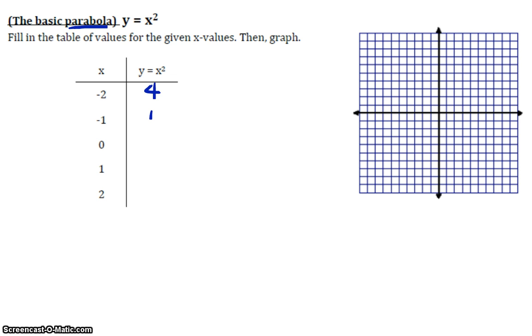We should have 4, negative 1 squared is 1, and negative 2 squared is negative 2 times negative 2, which is positive 4. 0 squared is 0, 1 squared is 1, 2 squared is 4.